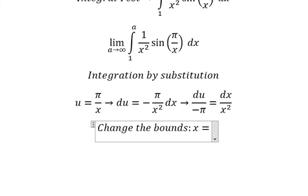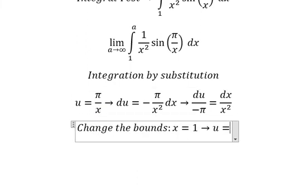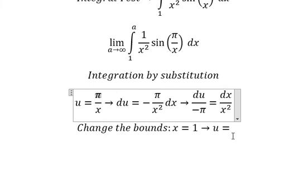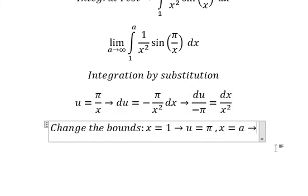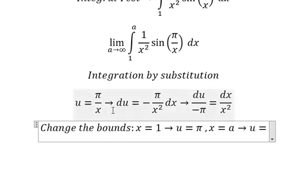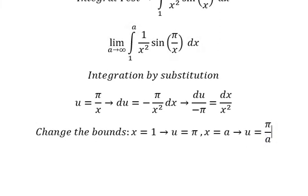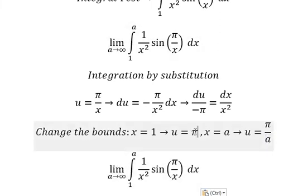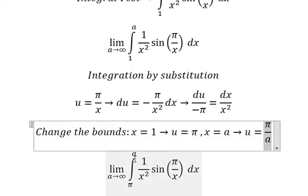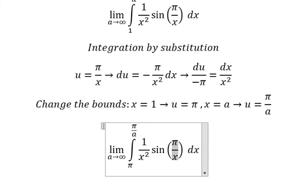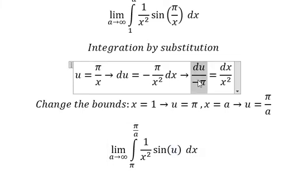Now we need to change the bounds. When x equals 1, we get u equals b. When x equals a, we get u equals b/a. So the lower bound 1 is replaced by b, and the upper bound a is replaced by b/a. Inside the integral, 1/x² dx is replaced by du over negative b, and b/x is replaced by u.